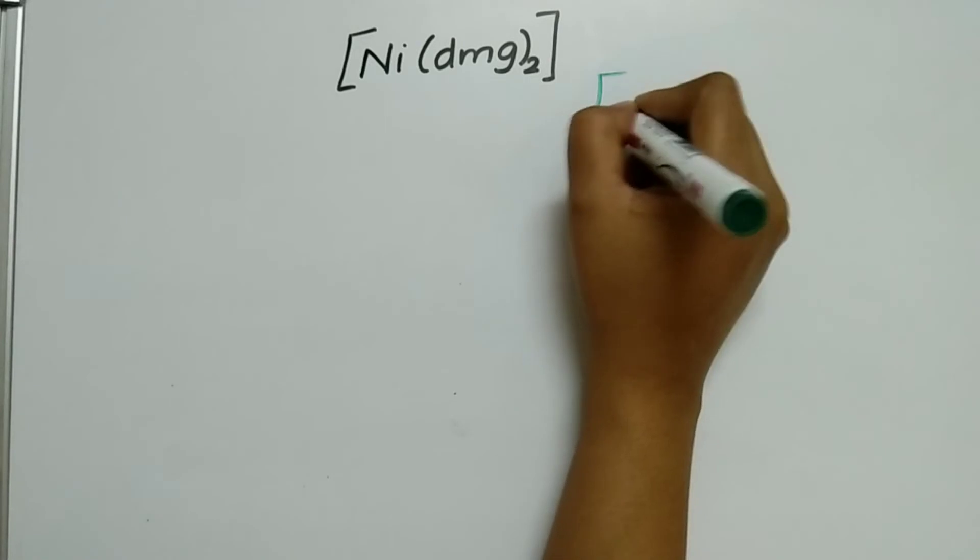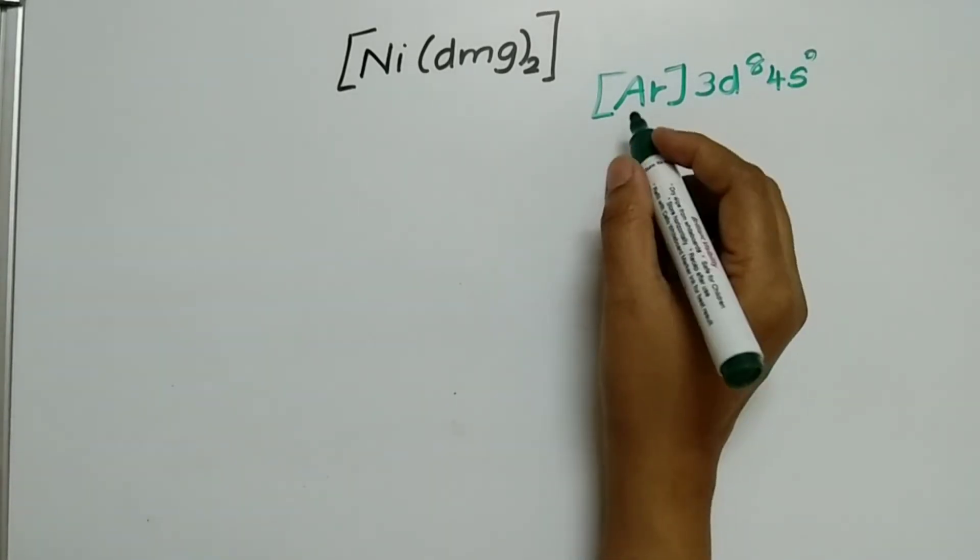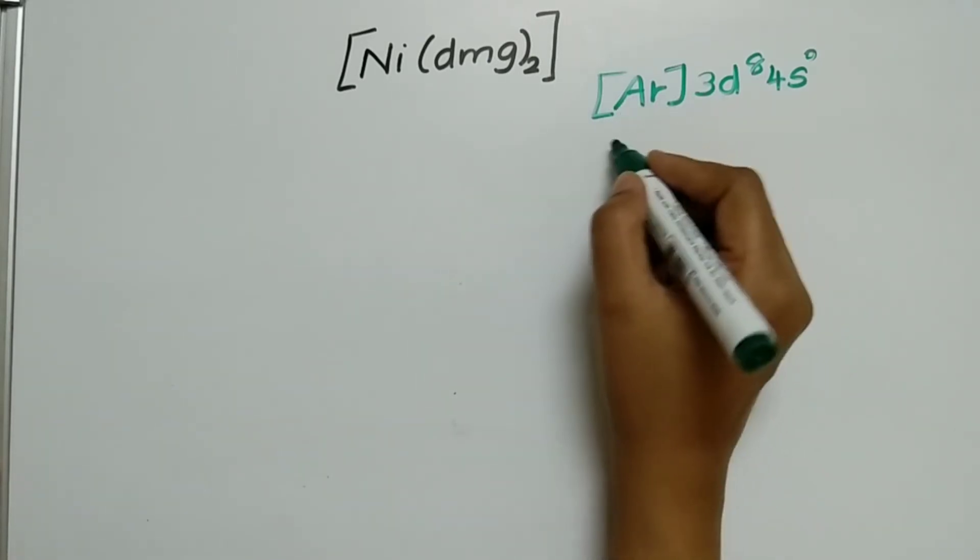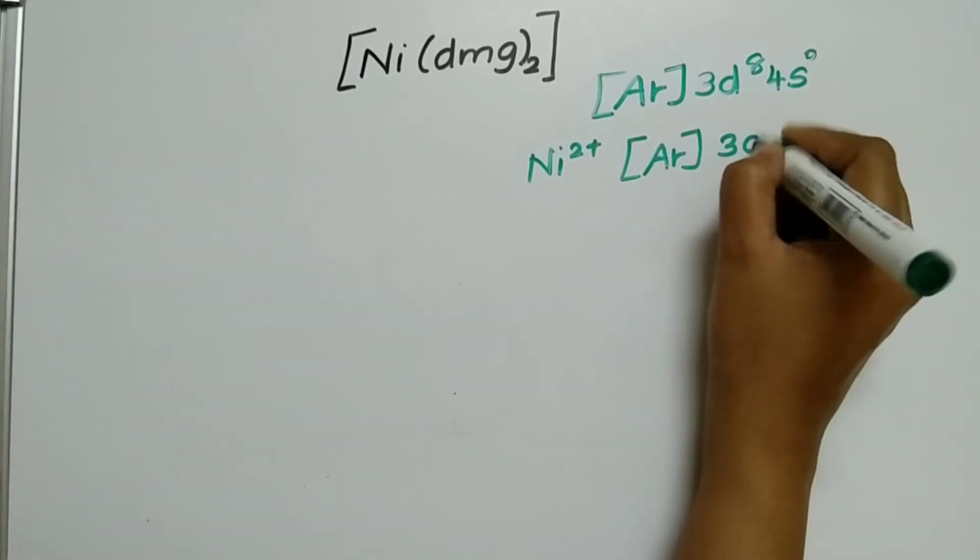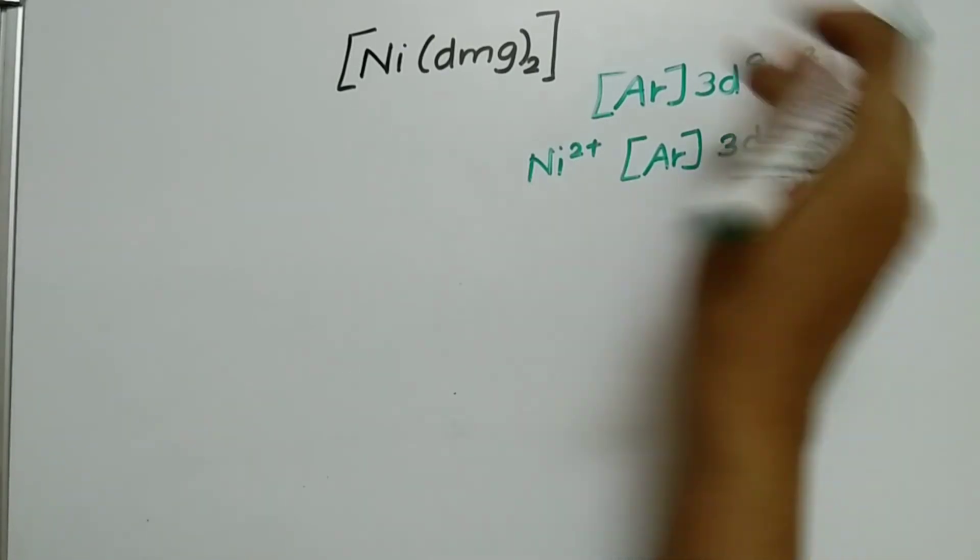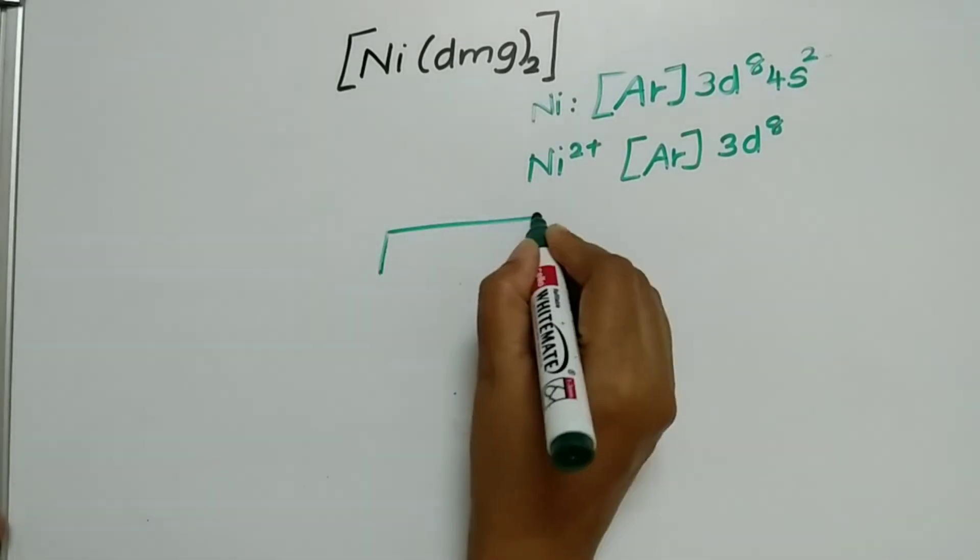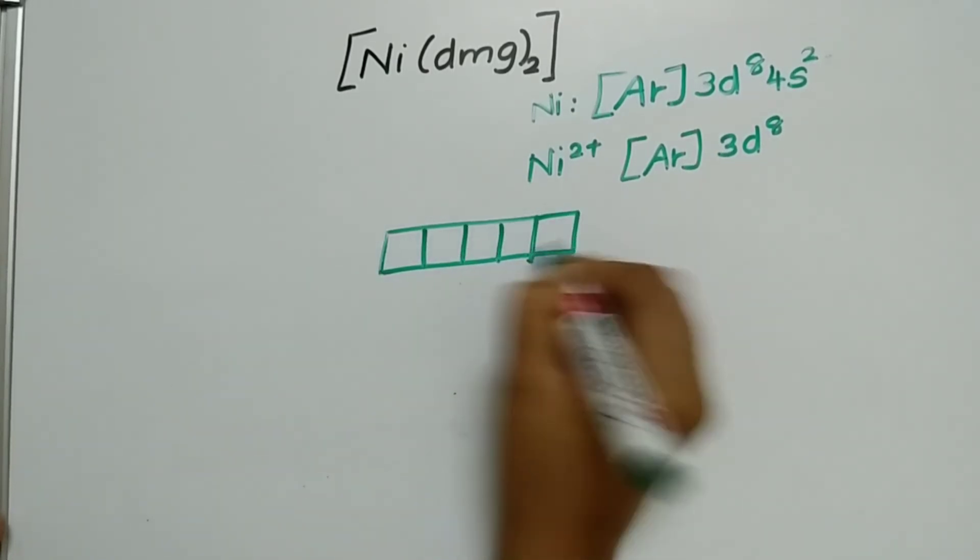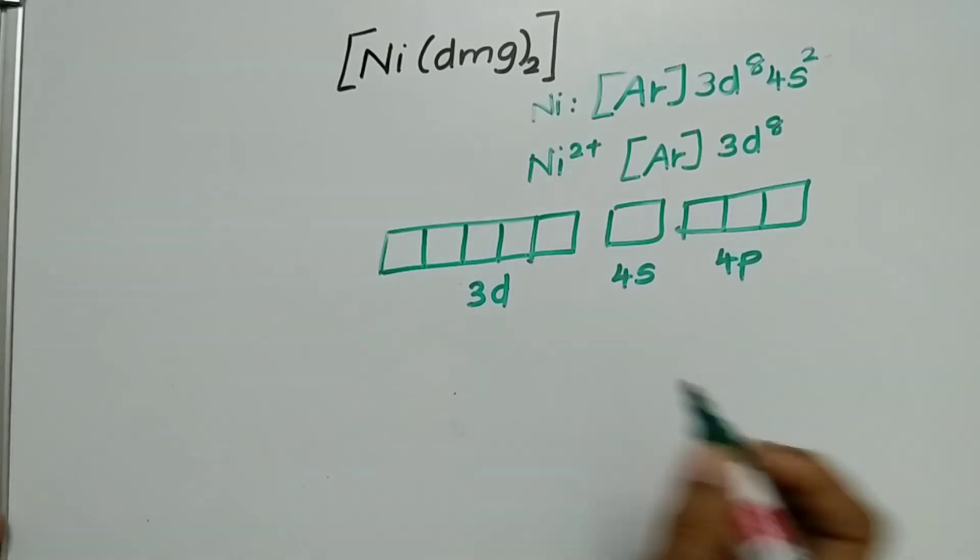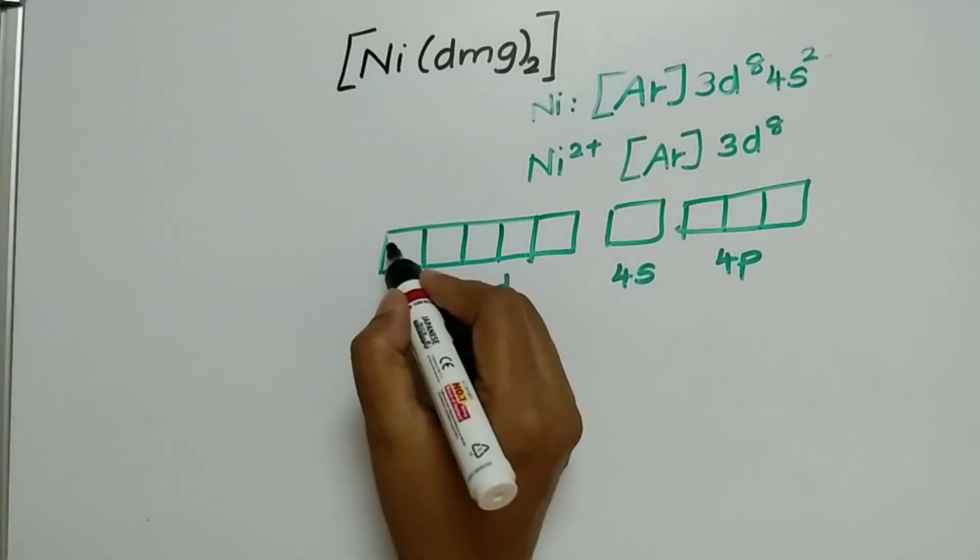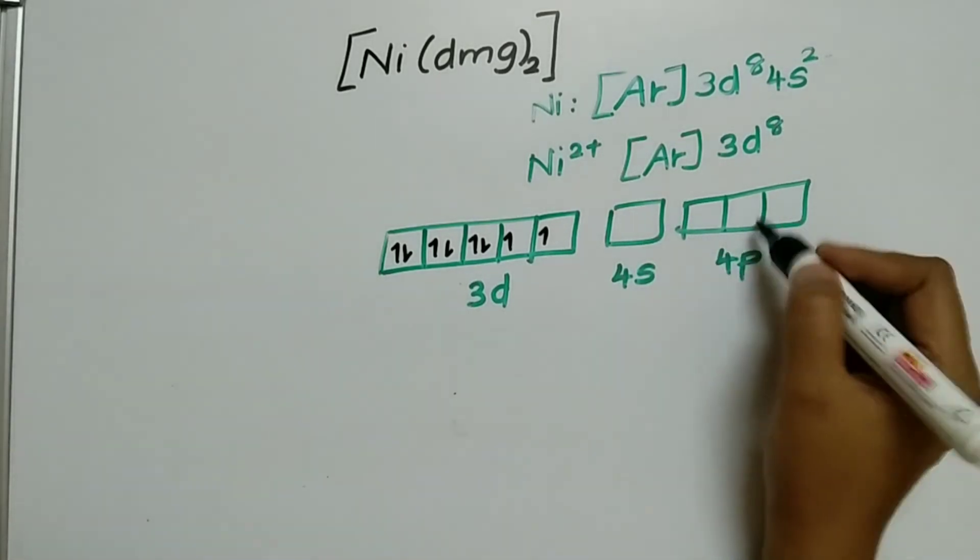Nickel, electronic configuration for nickel is 3d⁸ 4s². If you find for nickel 2 plus, you find the oxidation state, it is nickel 2 plus, electronic configuration 3d⁸. 4s² for nickel, nickel 2 plus means its electronic configuration 3d⁸. Let us draw the orbitals here. 1, 2, 3, 4, 5, and 4P. 1, 2, 3, 4, 5, 6, 7, 8. 4S no electron, 4P no electron.